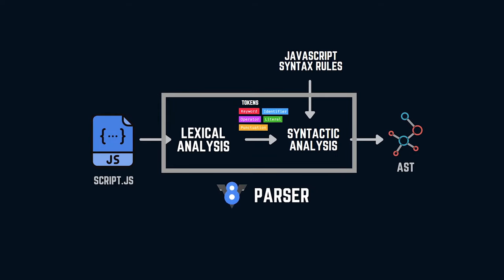There are two stages in a V8 parser: lexical analysis and syntactic analysis. Through lexical analysis, the whole program is scanned and broken down into different components called tokens — such as identifiers, operators, keywords, literals, etc. During syntactic analysis, we check whether the generated tokens form a meaningful JavaScript expression using JavaScript syntax rules.